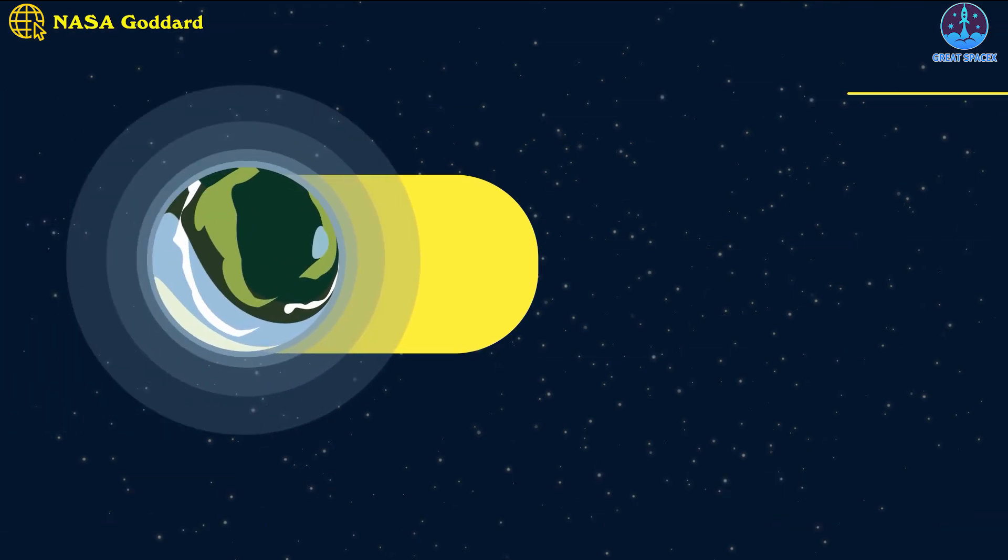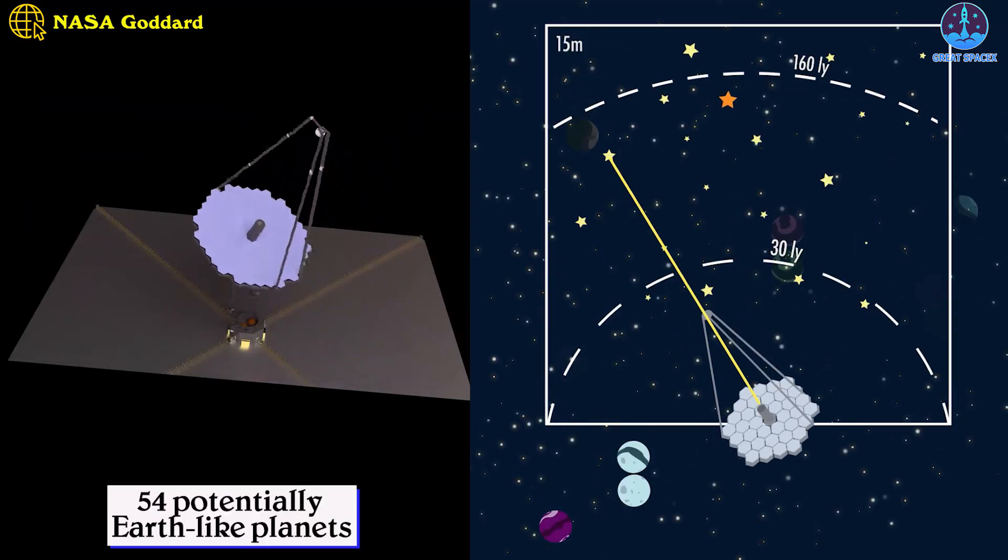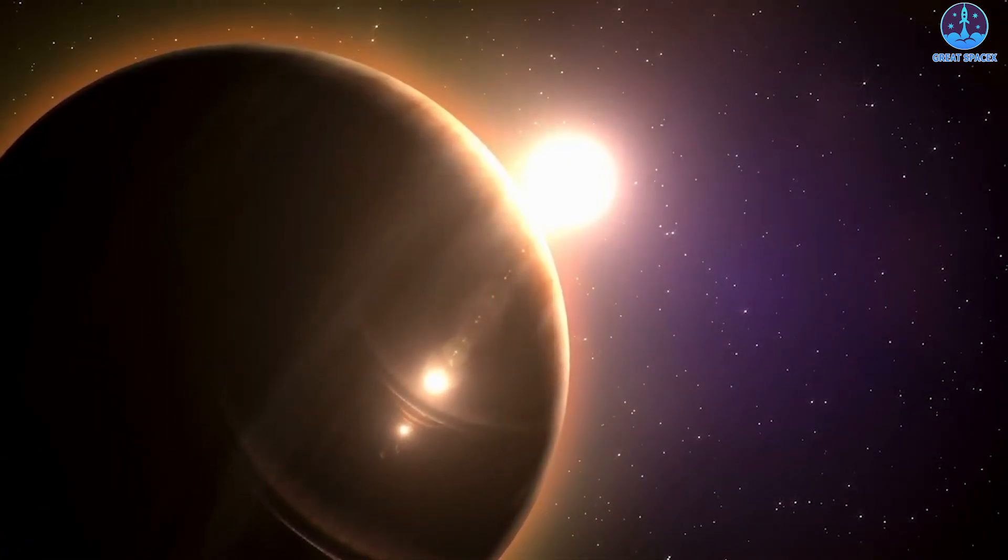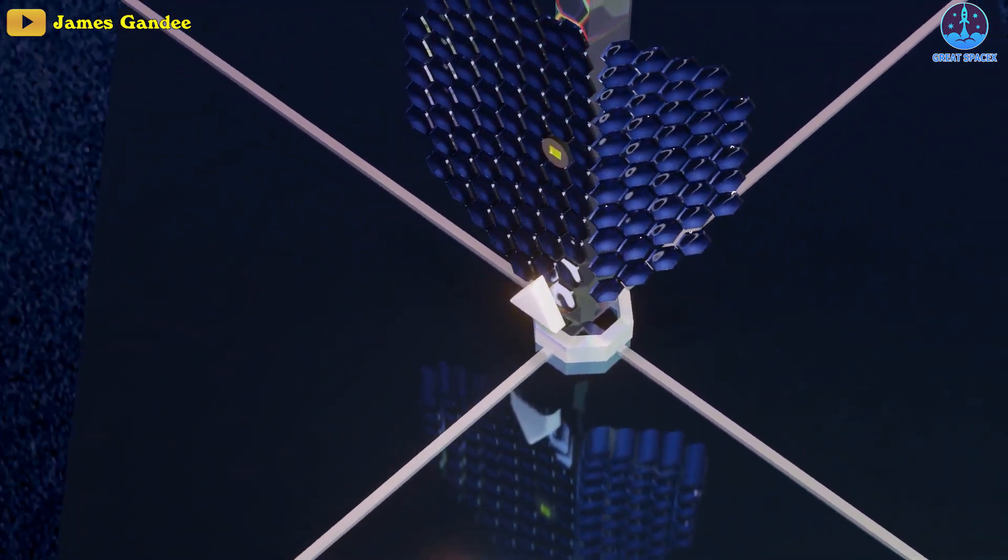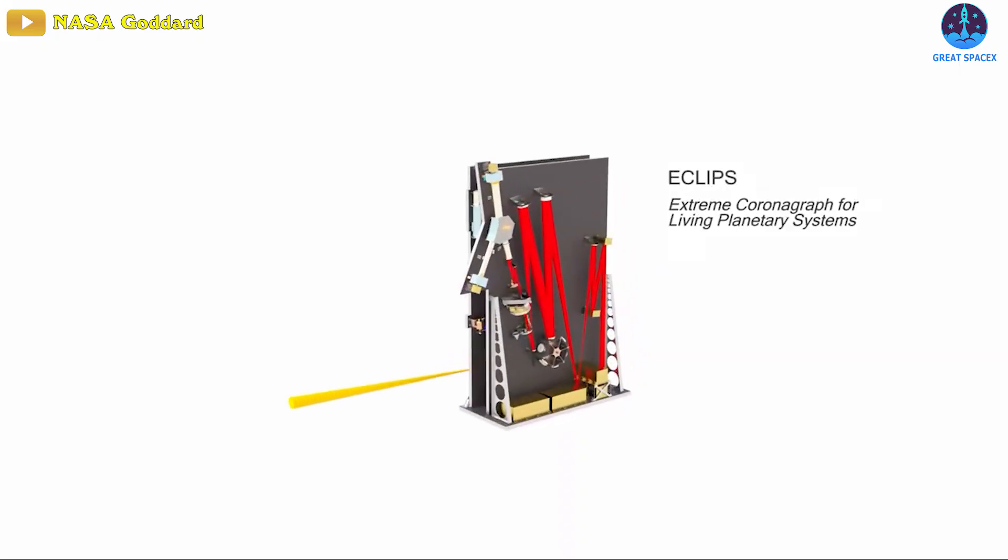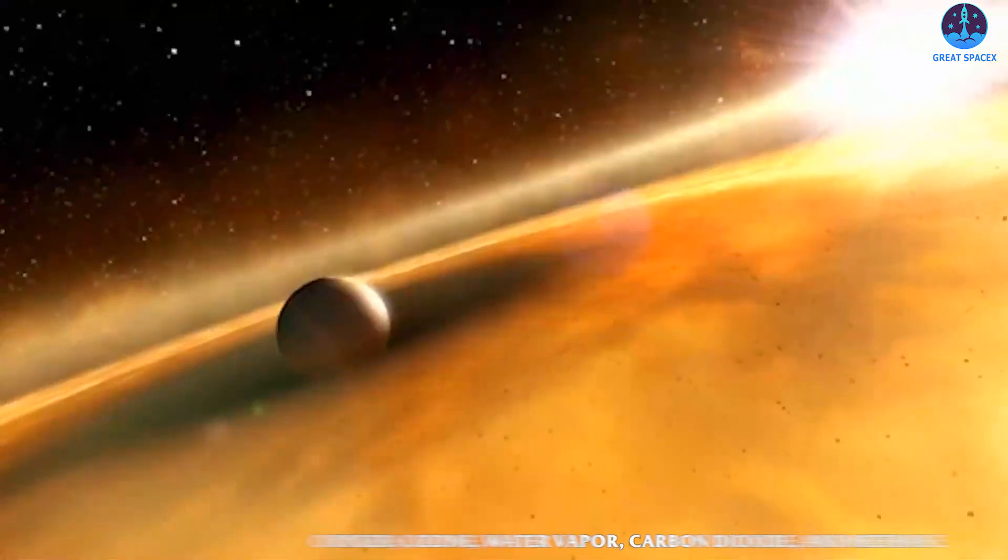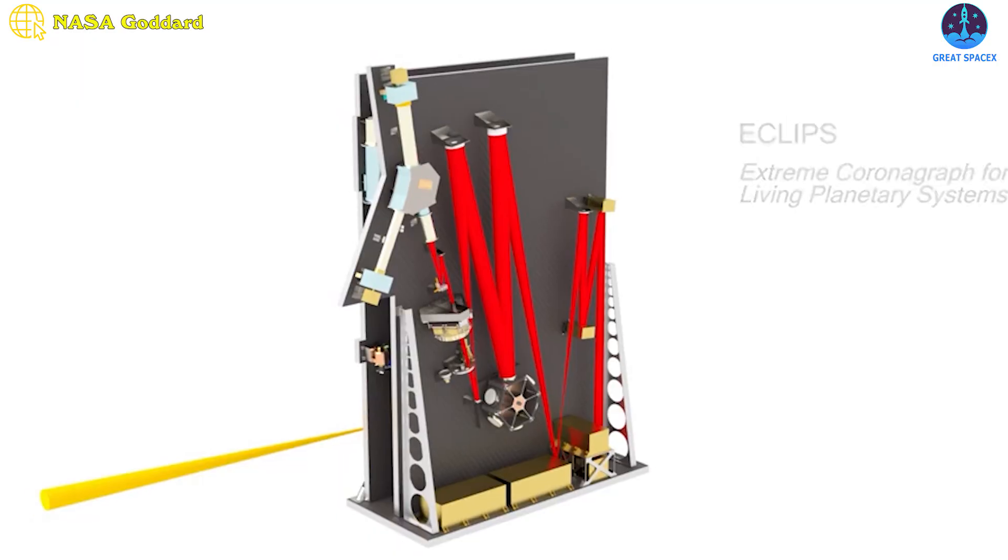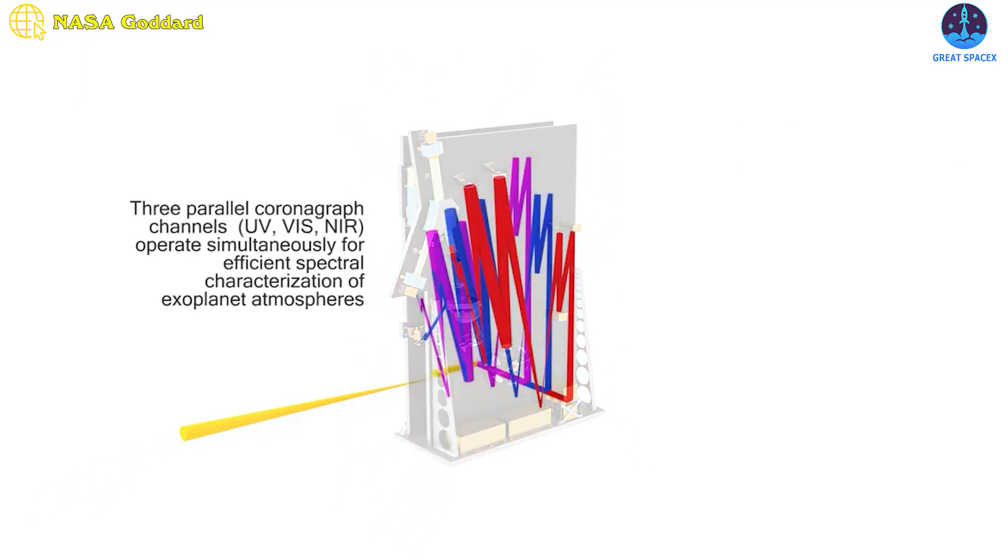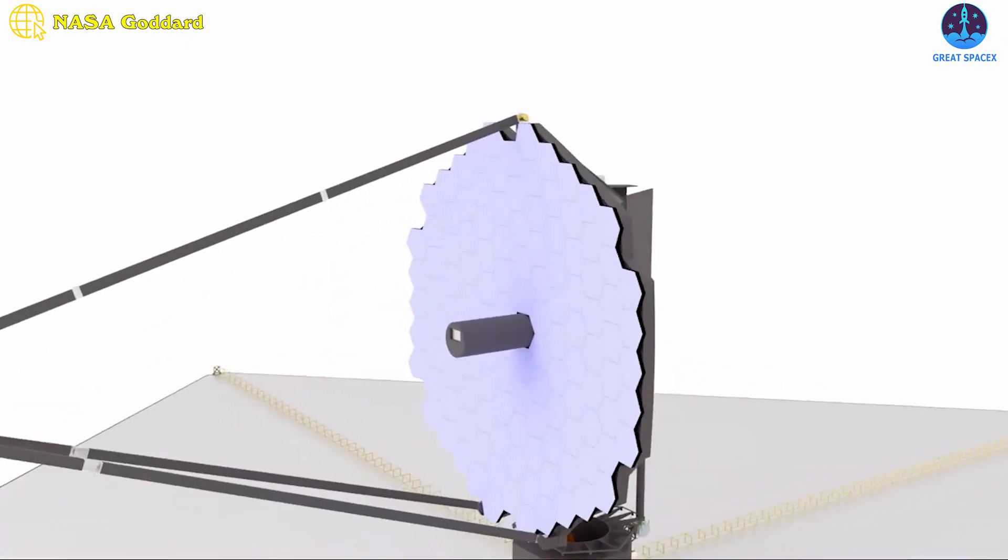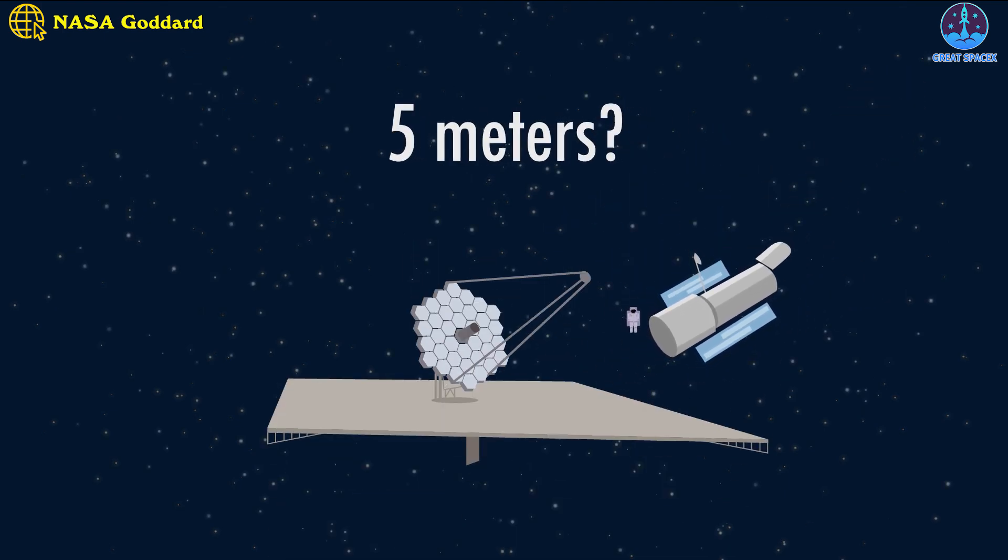Scientists believe that the deluxe version of the observatory could identify and study 54 potentially Earth-like planets over a five-year observing period, along with hundreds of other larger planets. With LUVOIR, scientists will be able to read the contents of exoplanet atmospheres as never before. With the Extreme Coronagraph for Living Planetary Systems, it will be able to detect compounds such as oxygen, ozone, water vapor, carbon dioxide, and methane, which are all crucial components for the existence of life on those worlds.